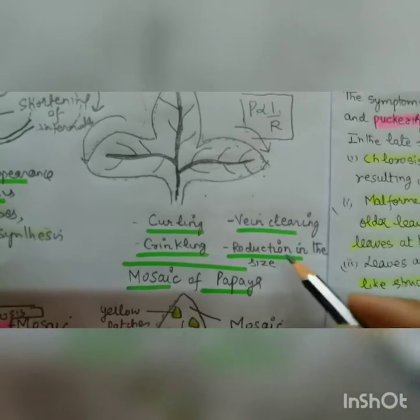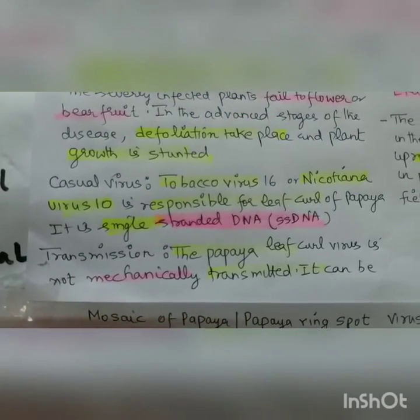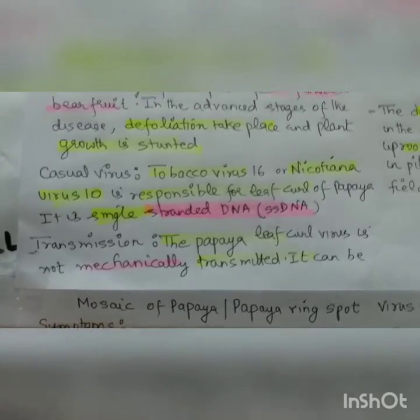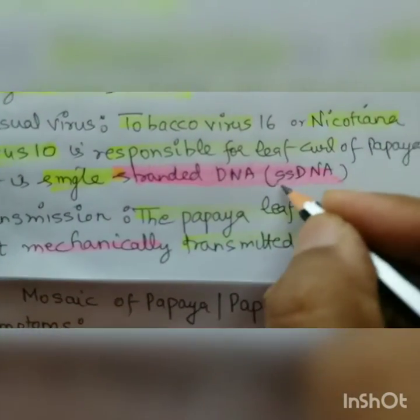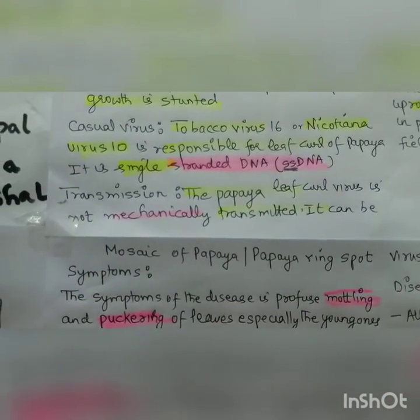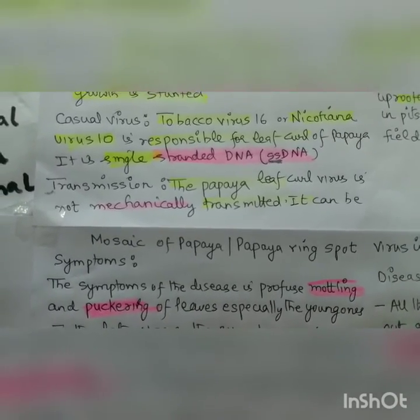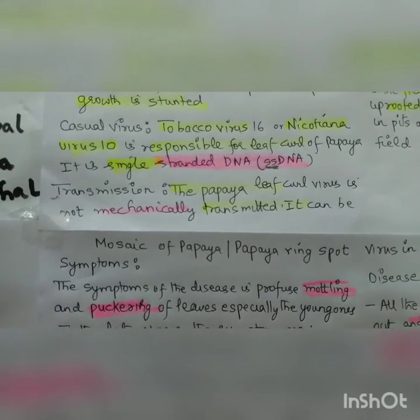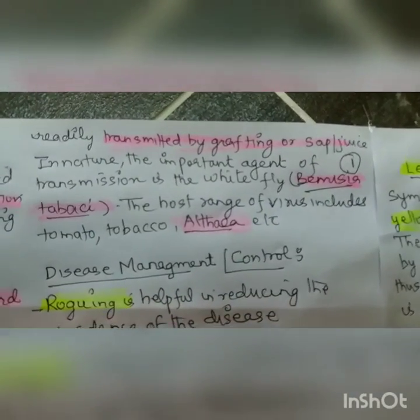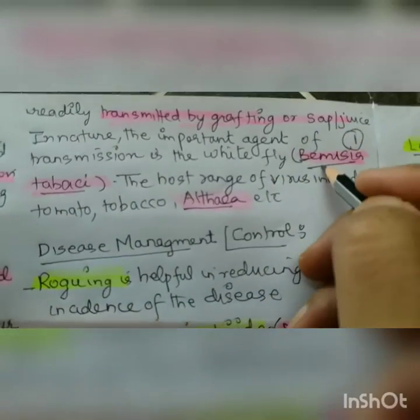The causal virus is Tobacco virus 16, also called Nicotiana virus 10. This is responsible for the leaf curl of papaya and it is single-stranded DNA. Make a table of all the diseases — this one question will come. The papaya leaf curl virus is not mechanically transmitted; it can be readily transmitted by grafting. In nature, the important agent of transmission is the whitefly Bemisia tabaci.